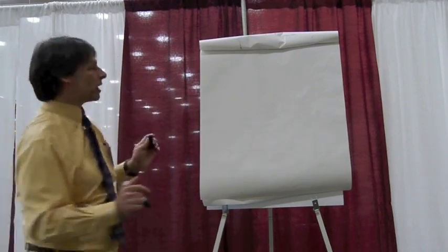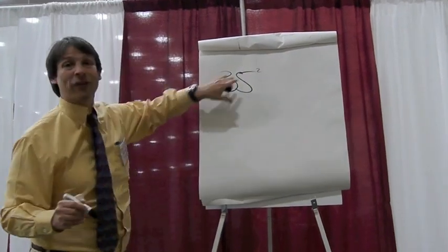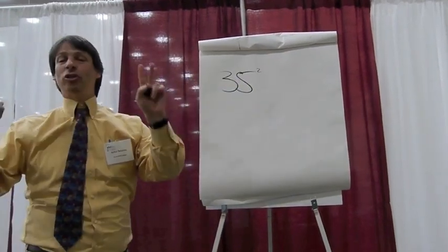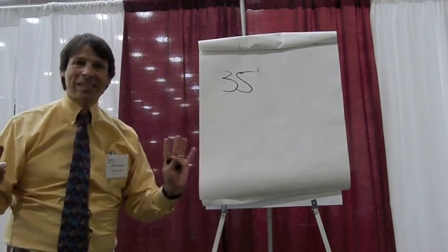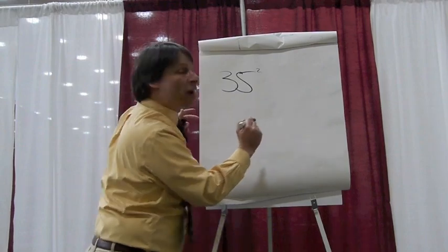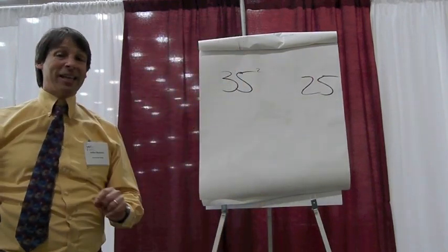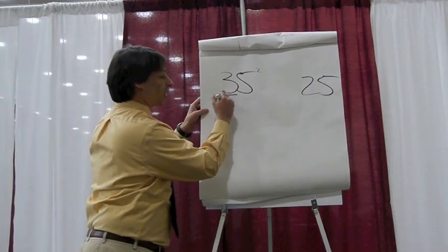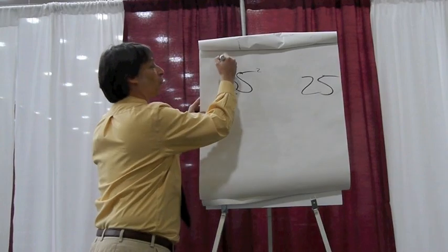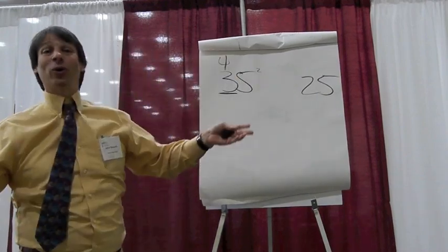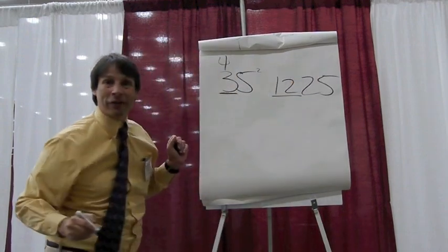If you square a number that ends in 5, let's say 35 squared, that means 35 times itself. There's only two things you need to remember. First, the answer will always, always end with 25. Now, how does it begin? It begins by taking the first digit, which in this case is 3, multiplying it by the next higher digit, which is 4. 3 times 4 is 12, and that's your answer, 1225.